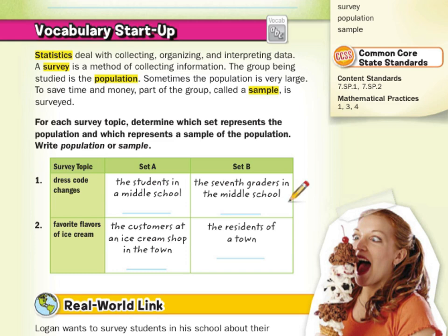Whenever it becomes election time and you see polls on the news like '45% of the country believes blank,' well it's not like they asked every single person in the country — they took a sample. So for each survey topic, determine which set represents the population and which represents a sample. For dress code changes: Set A is the students in a middle school — that's the population, the larger group — whereas Set B, the seventh graders in the middle school, is the smaller group, so that's the sample.